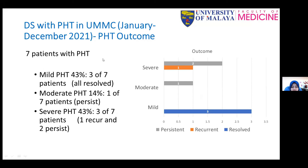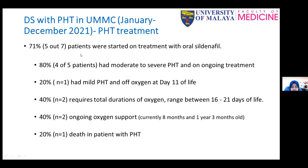Looking at outcomes of the seven patients with pulmonary hypertension: 43% (three out of seven) had mild pulmonary hypertension and all resolved; one had moderate pulmonary hypertension that persisted; and 43% (three) had severe pulmonary hypertension — one recurrence and two persistent until now. For treatment, 70% (five out of seven) were started on oral sildenafil, and four out of five with moderate to severe disease are still on ongoing treatment. Two patients required total duration of oxygen ranging from 16 to 21 days, two still require ongoing oxygen support currently (at eight months and one year three months old), and there was one death.